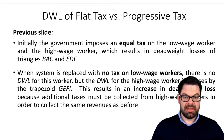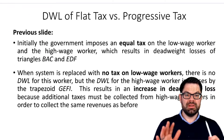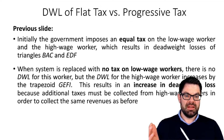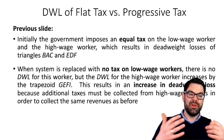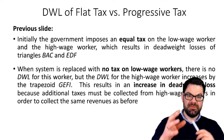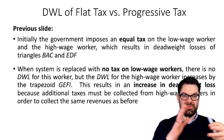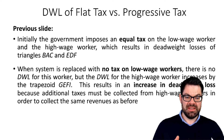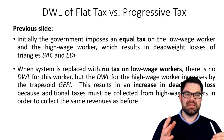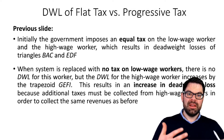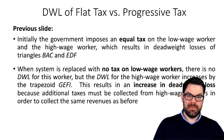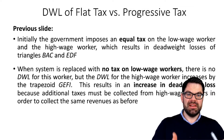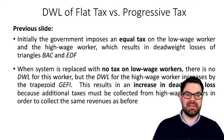So here on this slide you'll see an explanation again of what those different triangles measure and what the different deadweight losses are. What we've seen here is an example of a progressive income tax being less efficient than a flat tax.